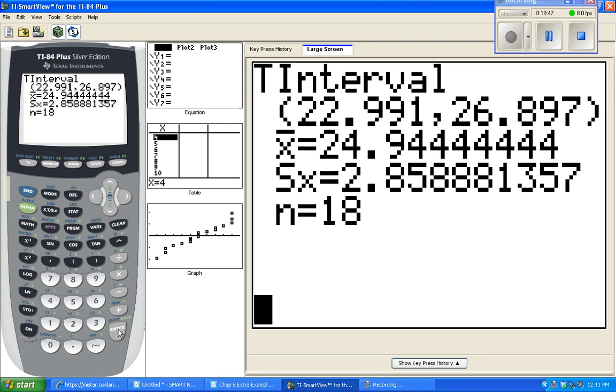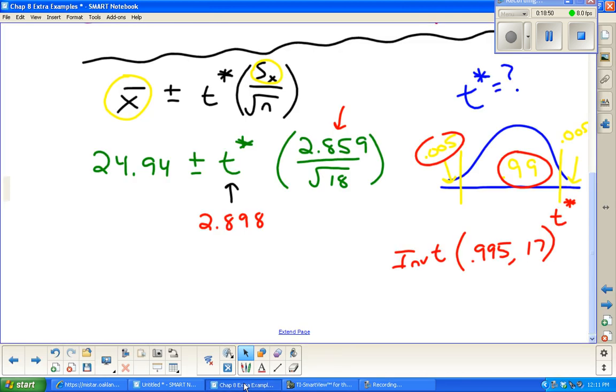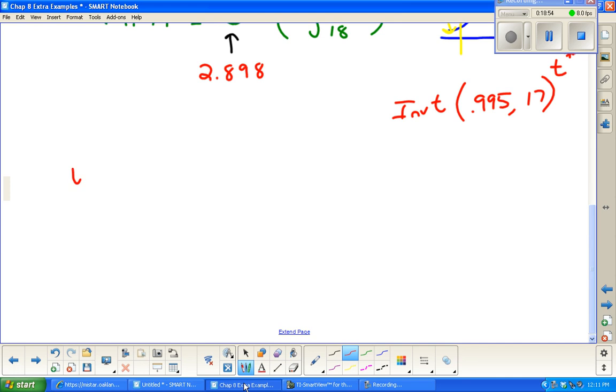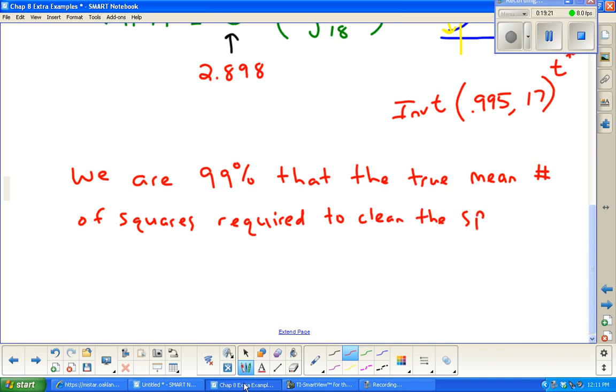We just need to finish with a conclusion saying we are 99% confident that the true mean number of squares required to clean up the spell is between those two numbers we got, the 22.987 and 26.89. Give me your conclusion. And that's that.